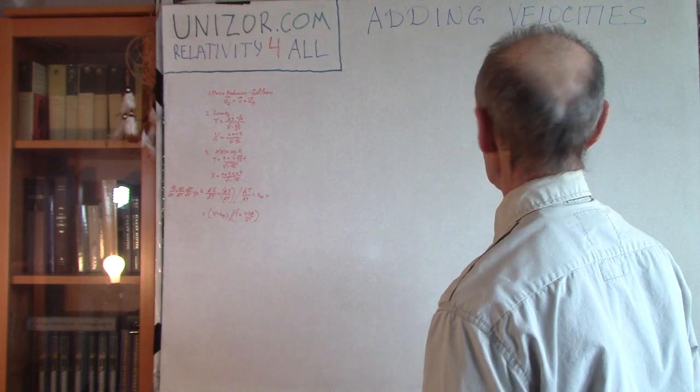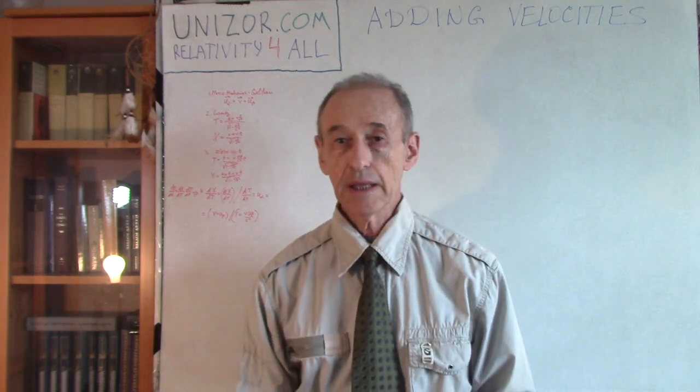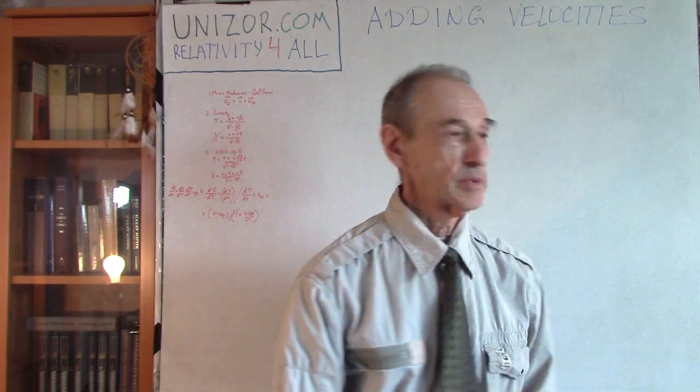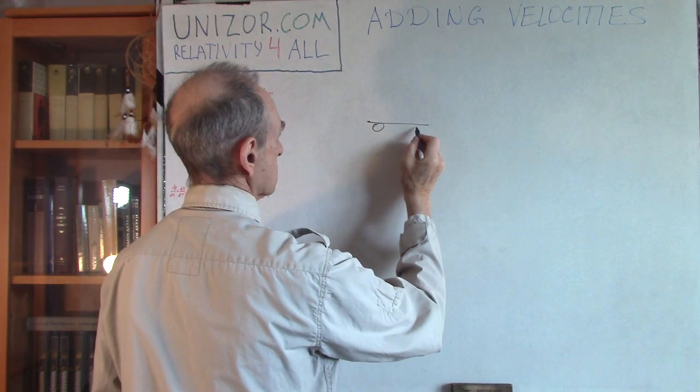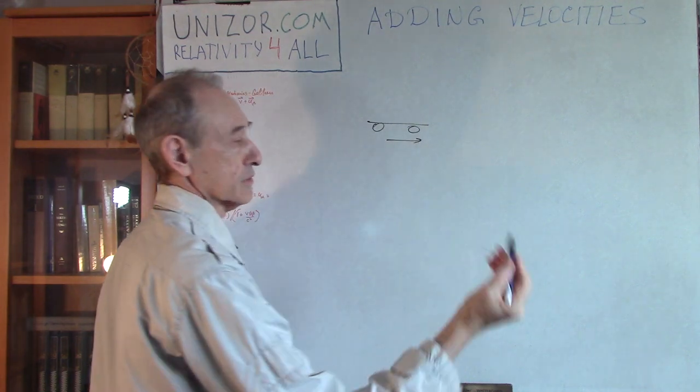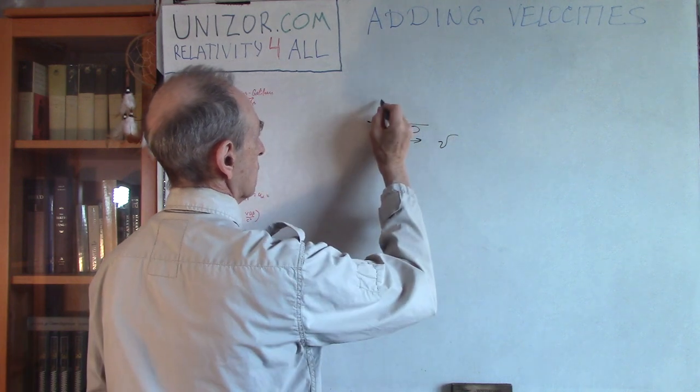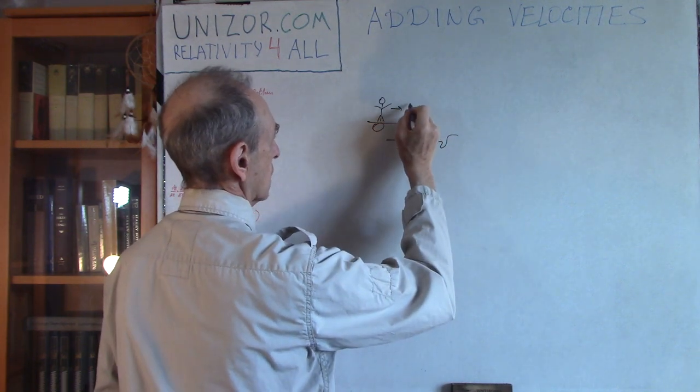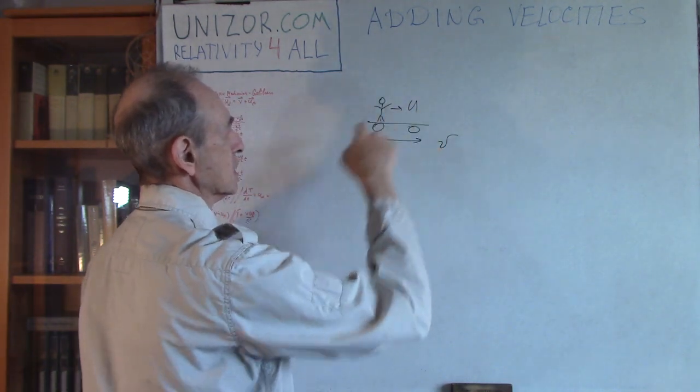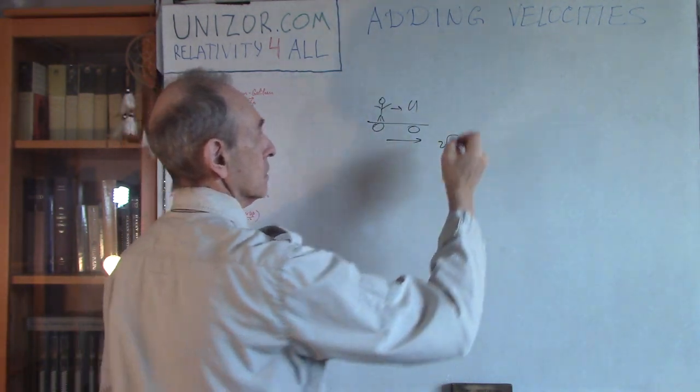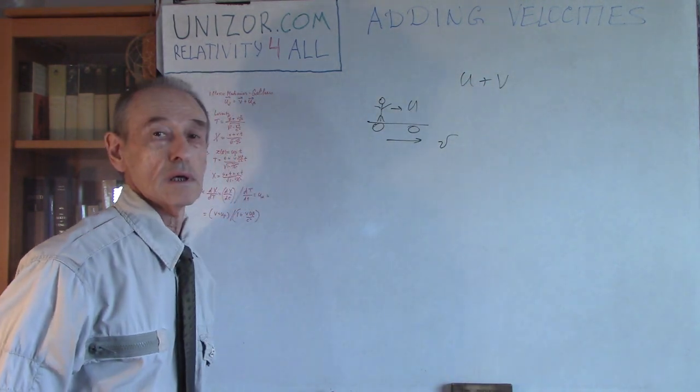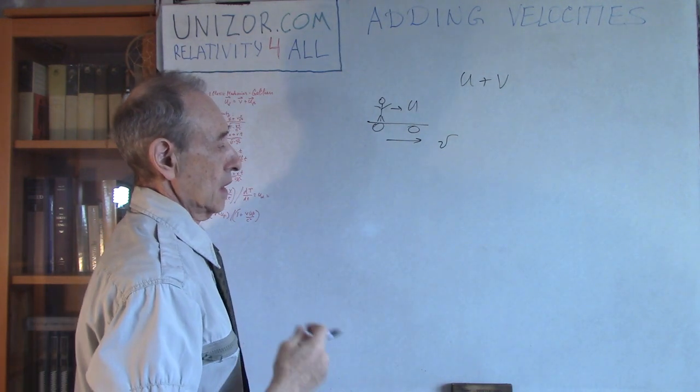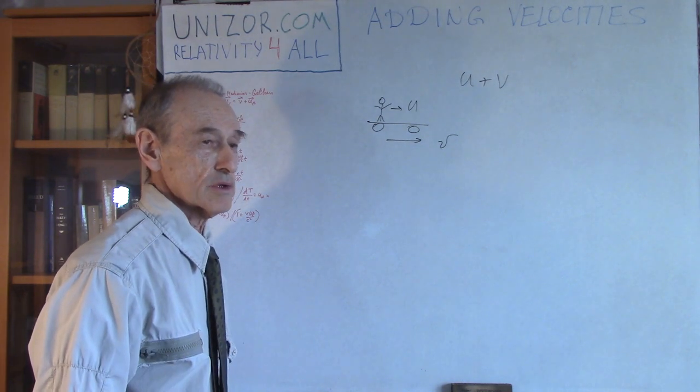Back to adding velocities. Let's start with Galilean transformation and Galilean approach to mechanics and physics. For example, if you have a platform which is moving relative to Earth with a speed V, and then you have a person here who is moving along the platform in the same direction with a speed U, what is the speed of this person relative to Earth? In Galilean transformation system, they're just adding the speeds. It's very easy to derive.